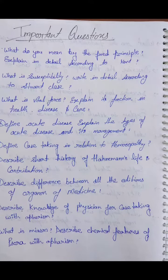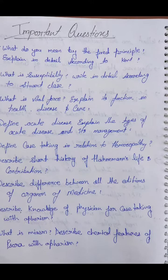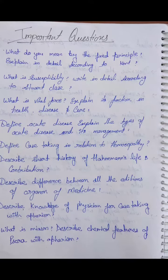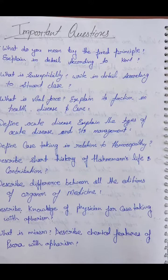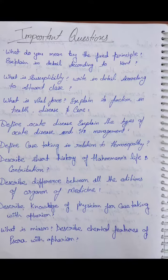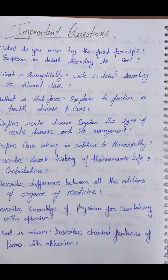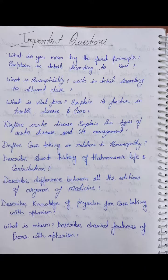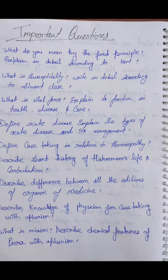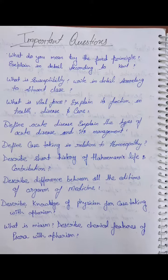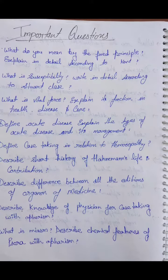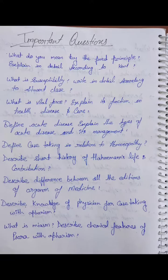What do you mean by the next principle? Explain in detail according to Kent. What is susceptibility? Write in detail according to Stuart Claussen. What is vital force? Explain its functions in health, disease, and cure. Define acute disease, explain the types of acute disease and its management. Define case taking in relation to homeopathy.